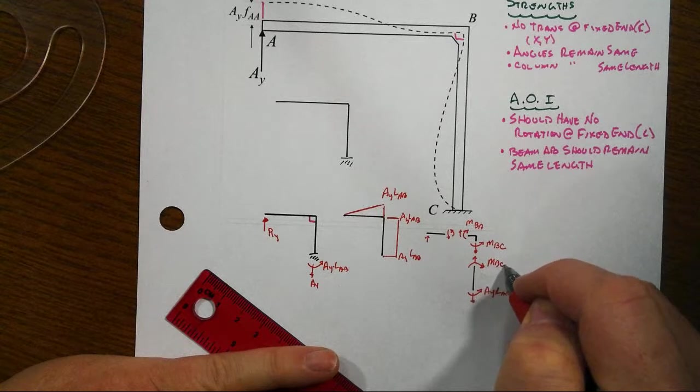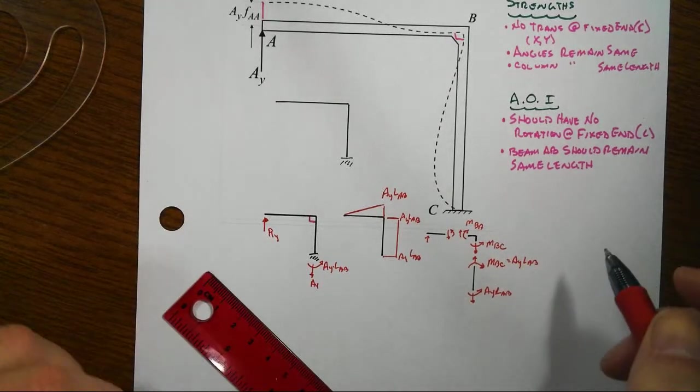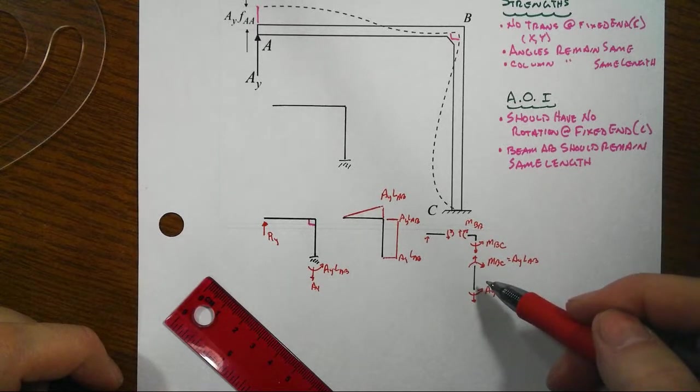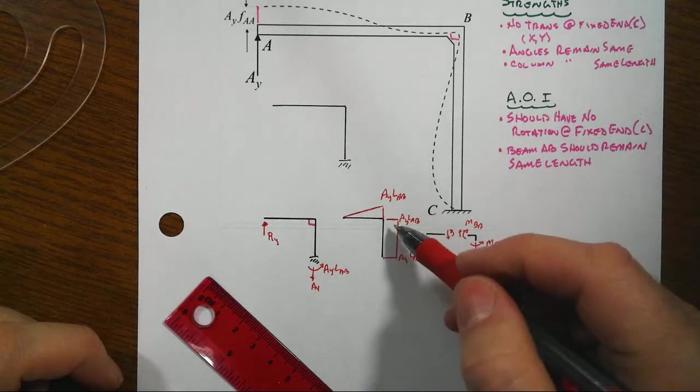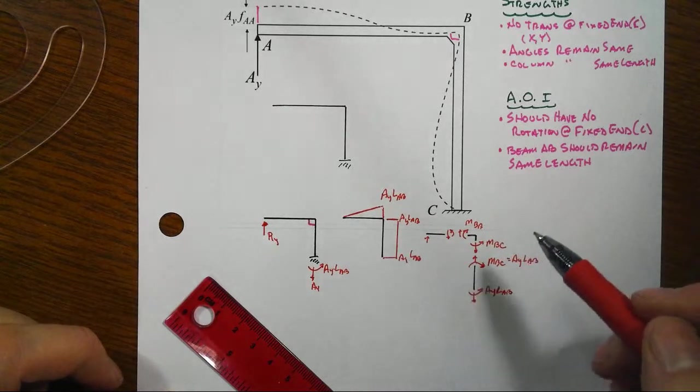Sure enough, then we get a column that is in pure bending at that magnitude of AY LAB. That MBC equals AY LAB. There is no shear there in the column. No shear, dM/dx equals V and V being shear. Then we have zero slope on the moment diagram there.